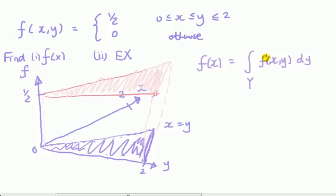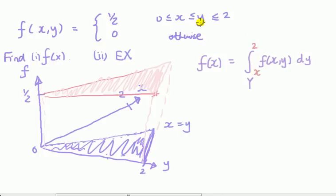If that's not clear, think about it in terms of summations — when we had a table of values, you simply summed across rows or columns of y to get the marginal for x. But here we integrate because x and y are continuous. So we integrate over y, which ranges from x to 2.